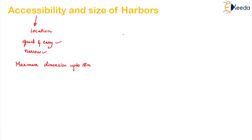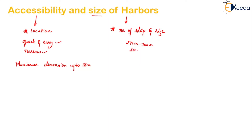Coming to the size of the harbour, it depends upon the number and sizes of ships. Accessibility purely depends upon the location, and your size of the harbour will purely depend upon the number of ships that will come into the harbour and their size. The biggest modern ships are about 275 to 300 metres long and 30 metres wide. There should be sufficient area for manoeuvring them without collision, so that you can park them easily.